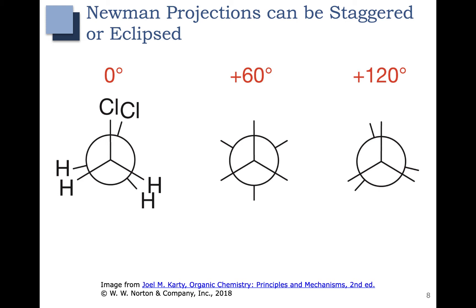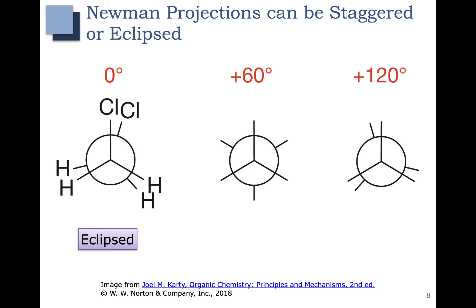Newman projections can be staggered or eclipsed. Eclipsed Newman projections are where the groups are right on top of each other. If you were looking at a real model of this molecule, the front chlorine would eclipse or cover up the back chlorine, and the front hydrogens would eclipse or cover up the back hydrogens. So this first example is considered to be eclipsed.